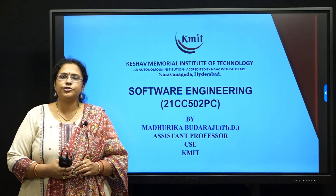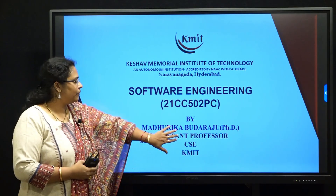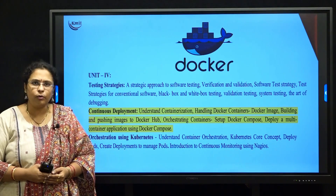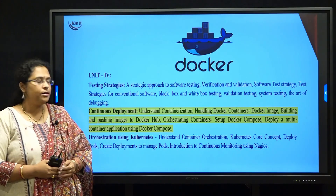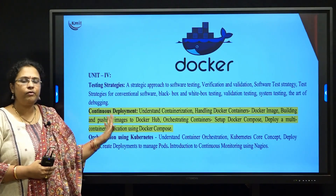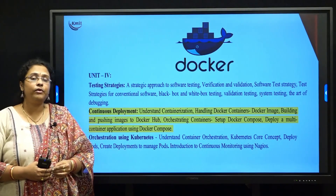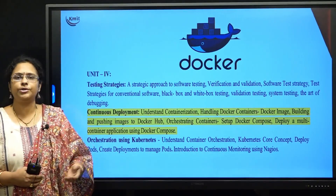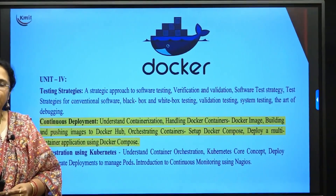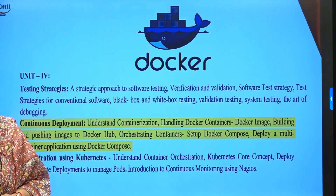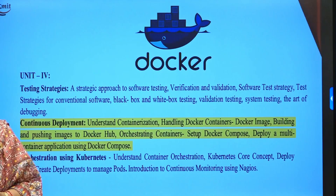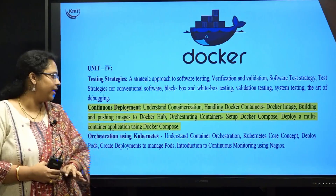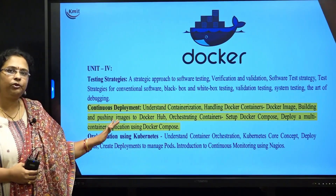Hello students, welcome to the next session of software engineering. Today, we shall be starting with the second chapter of unit number 4, which is related to continuous deployment. Under this particular unit, we will be talking about containerization, one of the containerization tools called Docker — its architecture, internal features, how to run those features, and the basic difference between Jenkins and Docker.